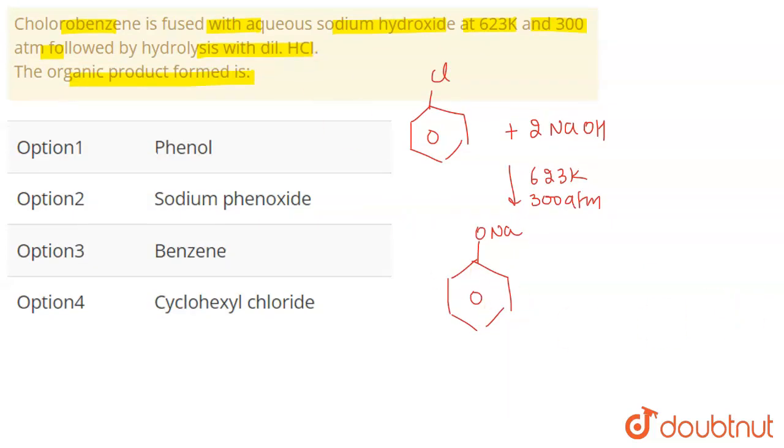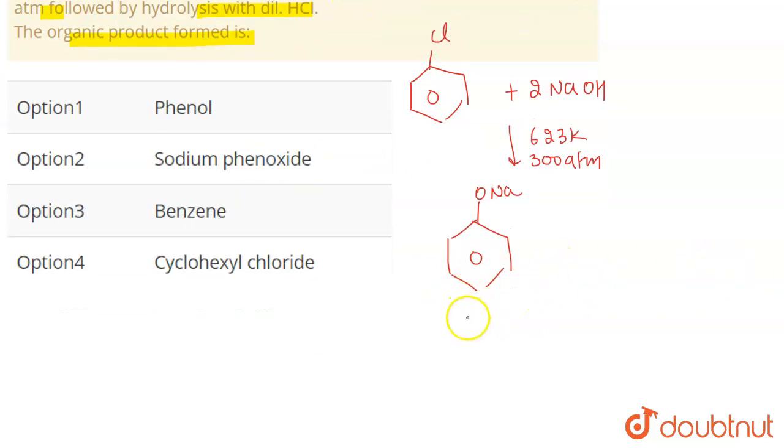And when this sodium phenoxide is formed - this is sodium phenoxide because C6H5O negative is a phenoxide ion - so when Na is added it becomes sodium phenoxide.